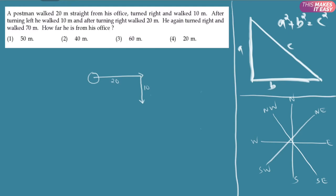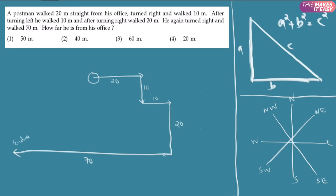After turning left, he walked 10 meters. Then turning right, he walked 20 meters. He again turned right and walked 70 meters. This is the ending point and this is the starting point, so we have to find the length of this distance.